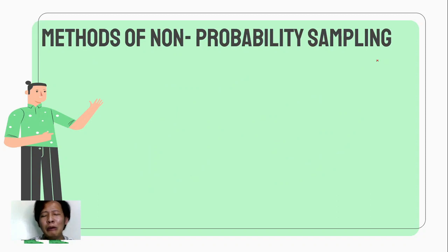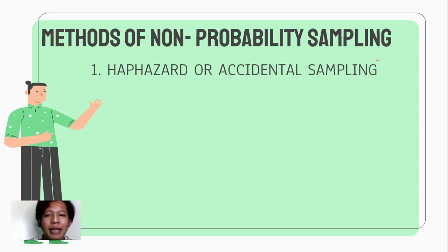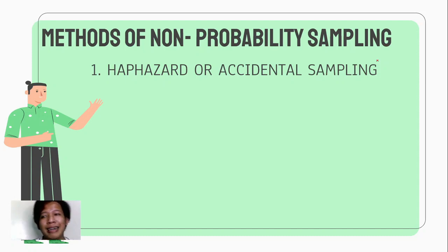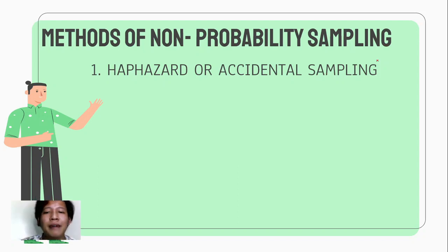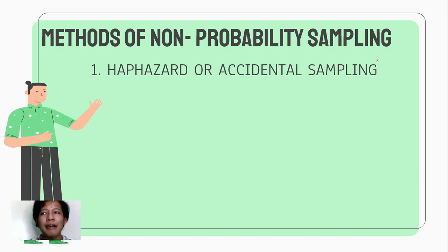Next, what are the methods of non-probability sampling? Kay non-probability sampling, wala nang kasa dito kung random or not. Depende na lang ito sa availability ng sample mo. Number one, we have haphazard or accidental sampling — kung ano lang yung maging available sa study mo, yun na yung kukunin mo.